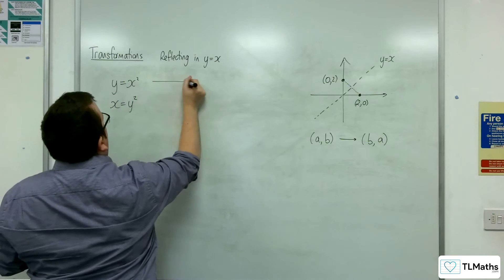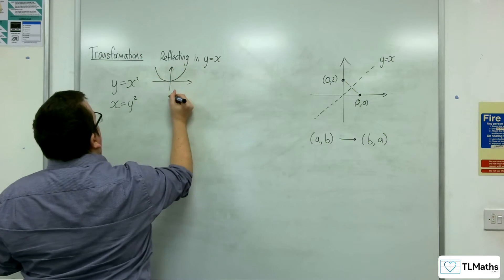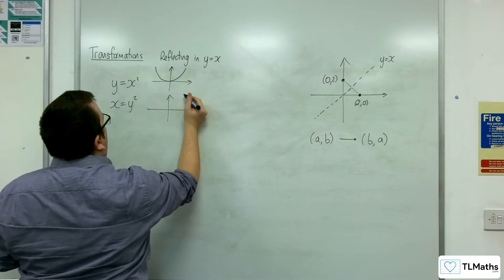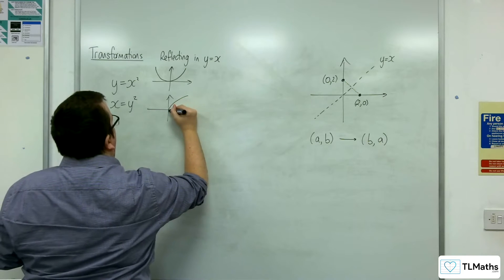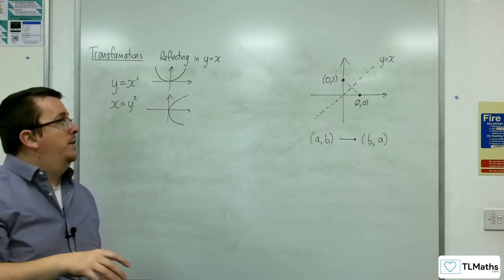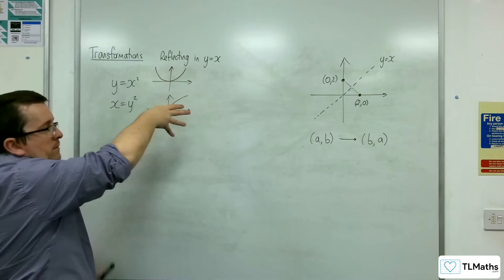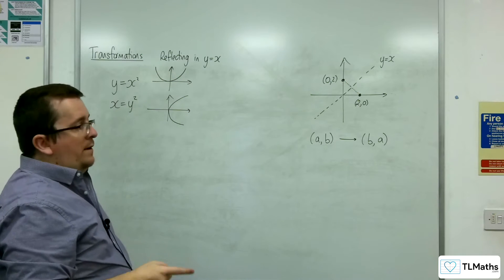So a curve that would originally look like that is now reflected in the line y equals x going to look like this. To be clear, this is a reflection in y equals x and not a rotation. This is not rotating the curve around.